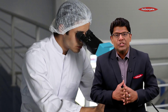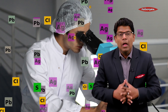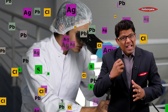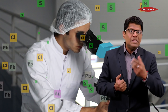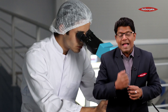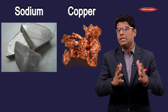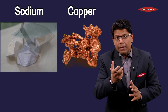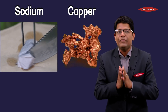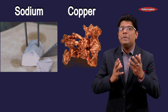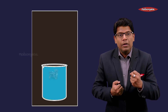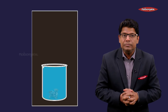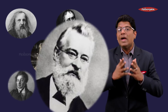As science progressed, more and more elements were discovered. Scientists found that there were some dissimilarities among metals and some dissimilarities among non-metals as well. For example, sodium and copper are both metals, but sodium is a soft metal easily cut with a knife, while copper is harder and cannot be easily cut with a knife. Sodium reacts much more vigorously with water, while copper does not react with water. Scientists couldn't understand why this difference existed.